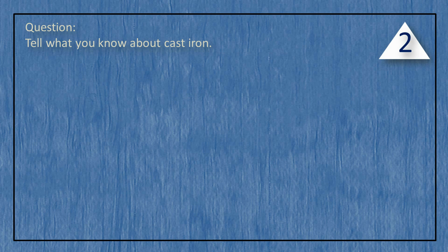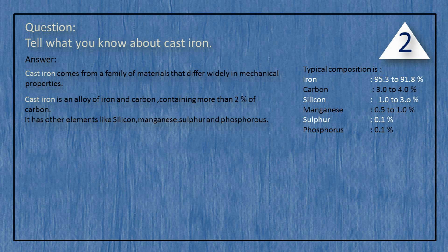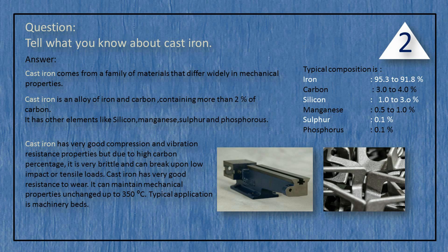Tell something about cast iron. Cast iron comes from a family of materials that differ widely in mechanical properties. Cast iron is an alloy of iron and carbon containing more than 2% carbon. It has other elements like silicon, manganese, sulfur, and phosphorus. Cast iron has very good compression and vibration resistance properties, but due to high carbon percentage, it is very brittle and can break upon low impact or tensile loads. Cast iron has very good resistance to wear and can maintain mechanical properties unchanged up to 350°C. A typical application is machinery beds.